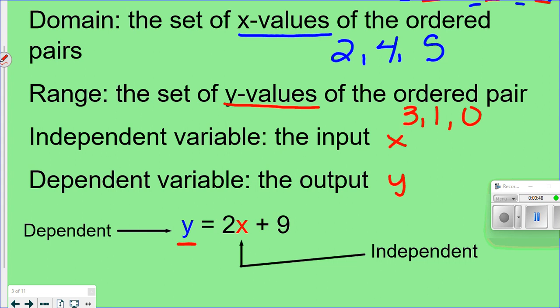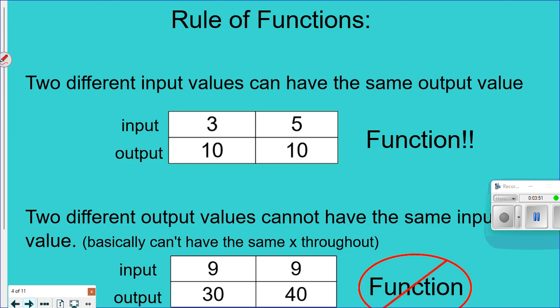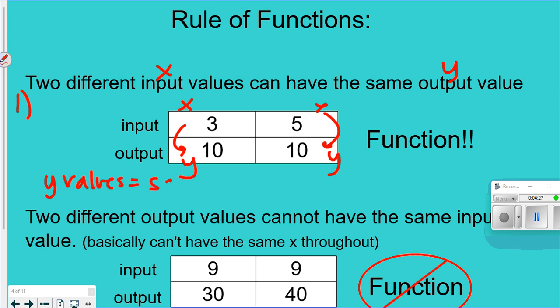Now the rules of functions — remember function machines: you put something in and get something out. There are two different rules. Rule one: two different input values, meaning two different x values, can have the same y value. So if you put in one x you get a certain y, and if you put in a different x you could get the same y — that's okay and it's still considered a function.